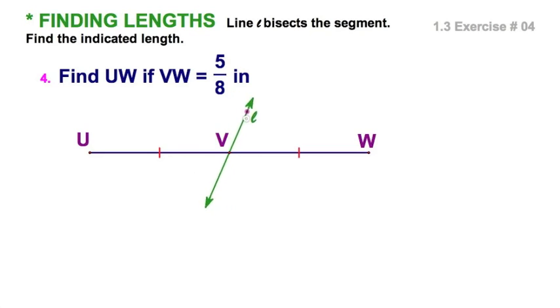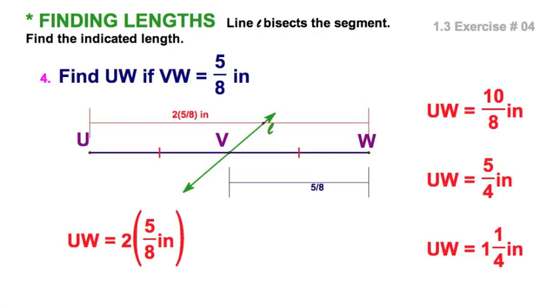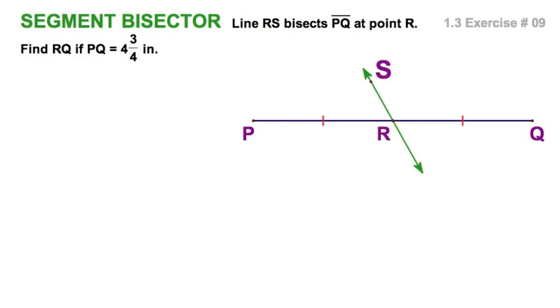Just like the last one, we've got this green line bisecting the segment. And we're given this measurement, 5/8 of an inch. And, again, VW would be the half segment or this portion. And if I want to know UW, I would need to double it. When I double 5/8, if you've forgotten your fractions, when I double that, that's 10/8. I can simplify the fraction to 5/4 and change that to the mixed number 1 and 1/4 inches.